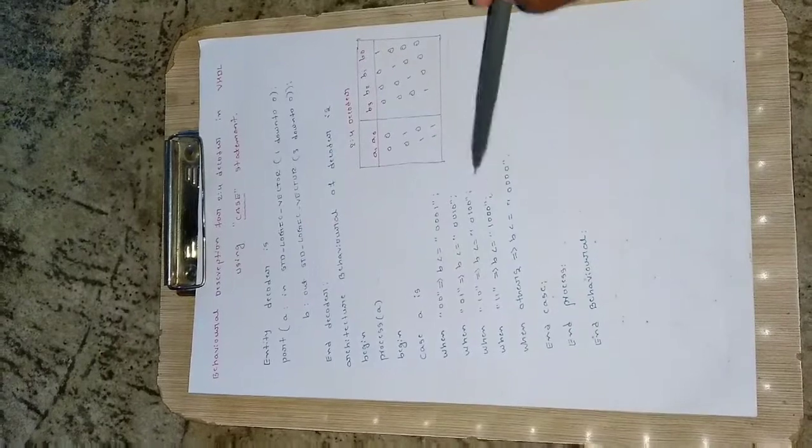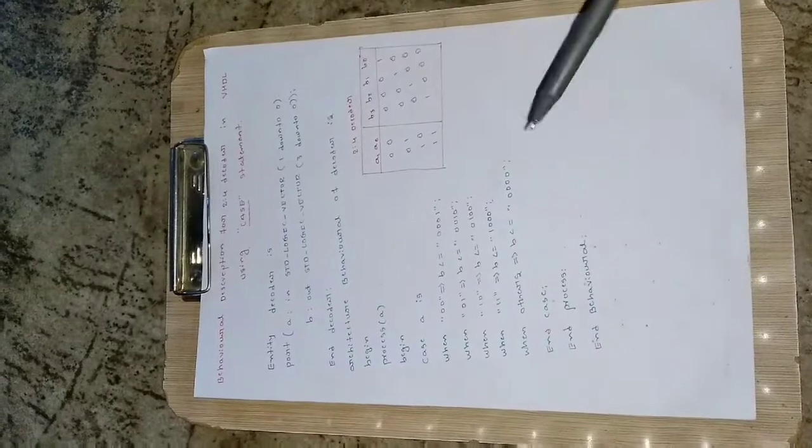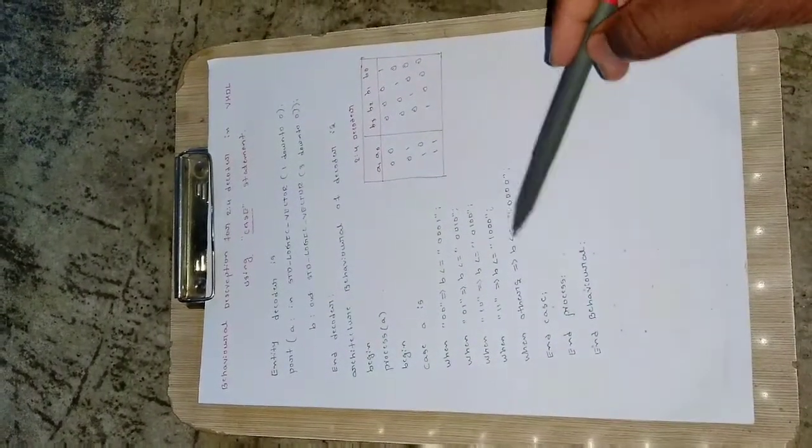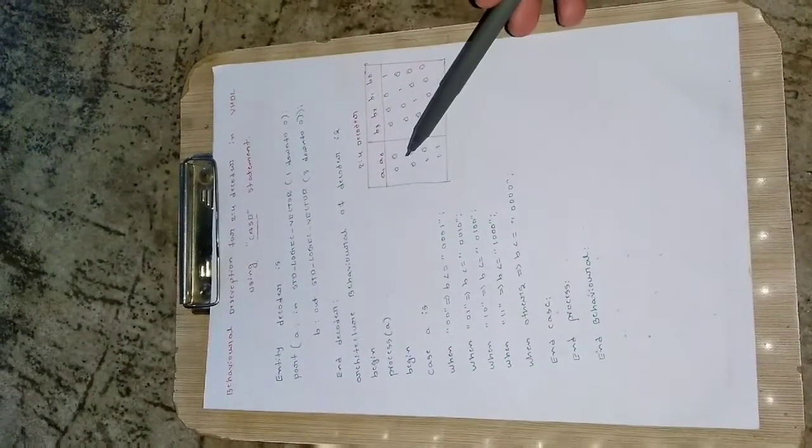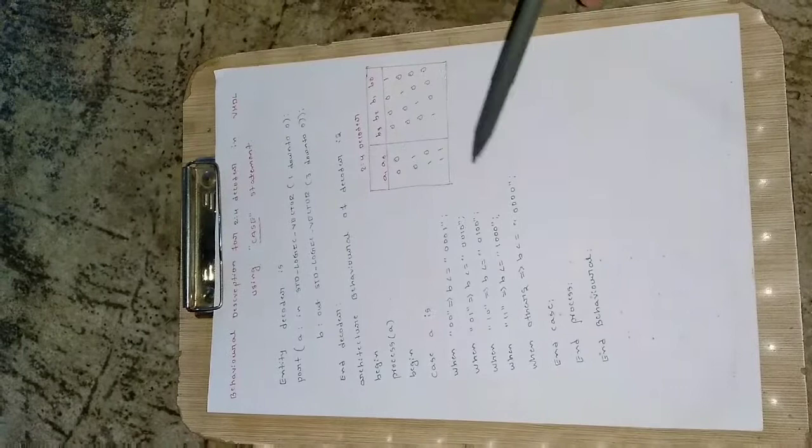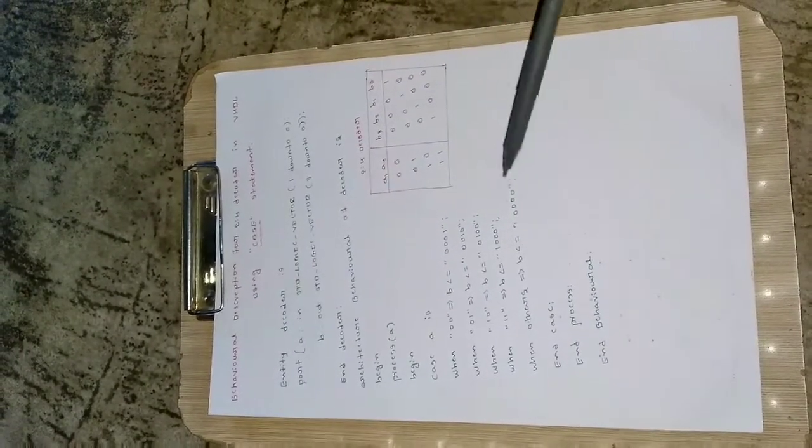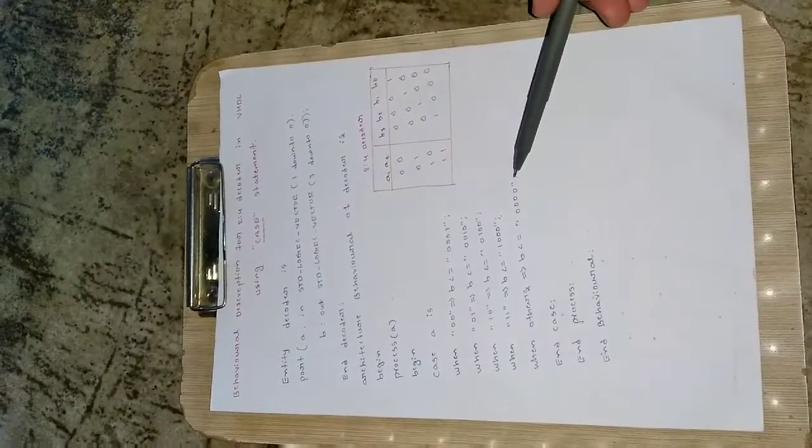That is the last condition. So we will write the whole truth table in terms of the case statements. Then when others, that is the default condition, assign B as 0,0,0,0. So if anything else other than this condition happens at that time assign B as 0,0,0,0. That means no output will be produced. So 0 will be the output.